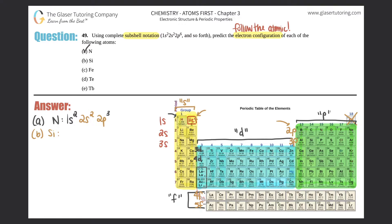This is going to be monotonous because you always start at one and get to the number you want. For part b, silicon is number 14, so I go from one all the way to 14. Start at 1s2, jump to 2s2, then 2p — collect all six boxes — that's 2p6. Down to sodium, that's 3s2. Now at number 13, which is 3p, collect one, two boxes to stop at silicon: 3p2. That's the answer.